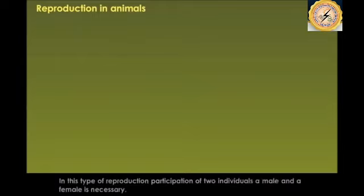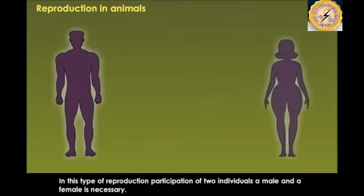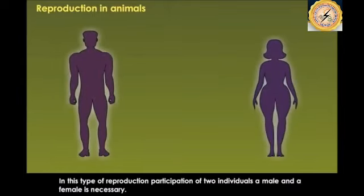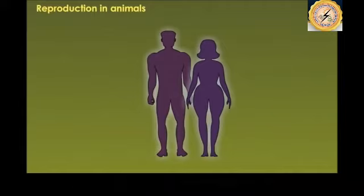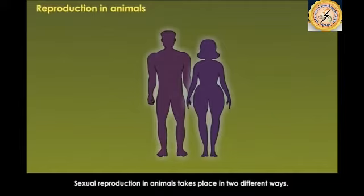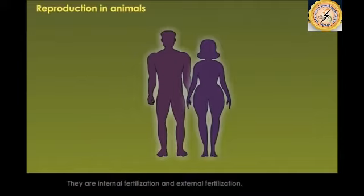Today our main focus is on reproduction in animals. Animals reproduce by sexual methods, and in this type of reproduction the participation of two individuals — a male and a female — is absolutely necessary. Sexual reproduction in animals takes place in two different ways: internal fertilization and external fertilization.